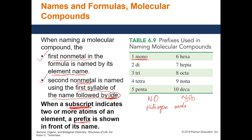So you would think it would be 'mononitrogen monoxide', but whenever you are writing the name you would never see the name begin with 'mono'. Even if there is one atom in the first element, you never use the prefix 'mono' at the very beginning — you get rid of it. For any other numbers (two, three, four, etc.) you still keep the prefix. The only prefix never used at the beginning of the first element's name is 'mono'. So the final name of this compound is 'nitrogen monoxide'.